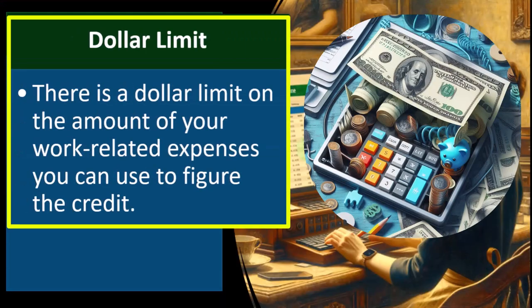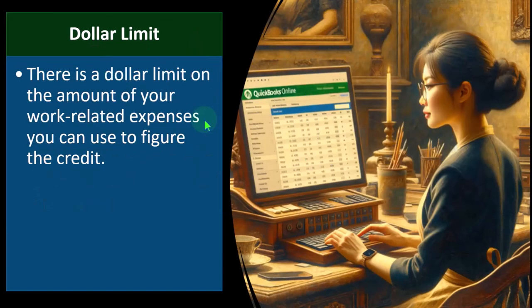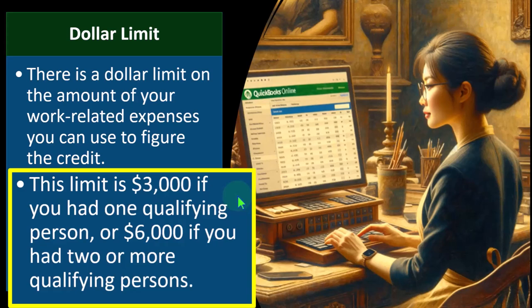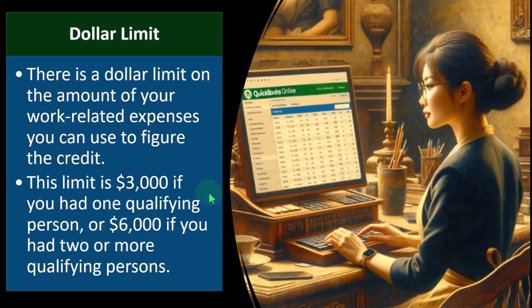Dollar limitation: there is a dollar limit on the work-related expenses you can use to figure the credit. Remember, these are called work-related because the purpose of paying for child care is to free you up to work. The limit is $3,000 if you had one qualifying person, or $6,000 if you had two or more qualifying persons.